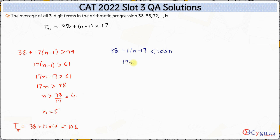Right? So we have 17n, 38 minus 17 is 21, so this should be less than 1000 minus 21, which is 979.